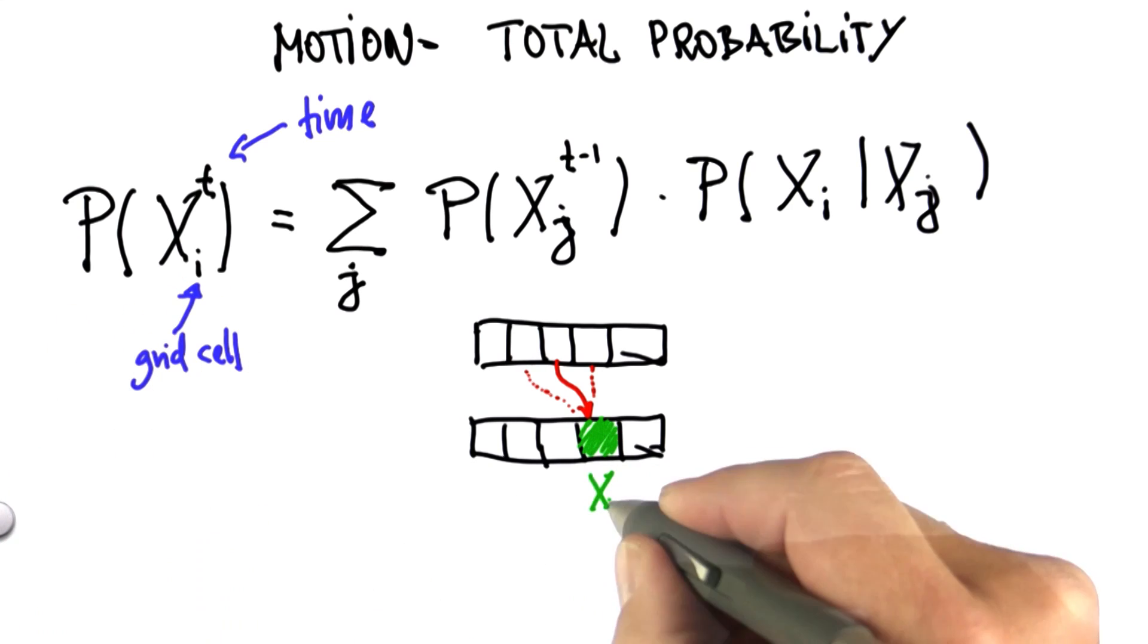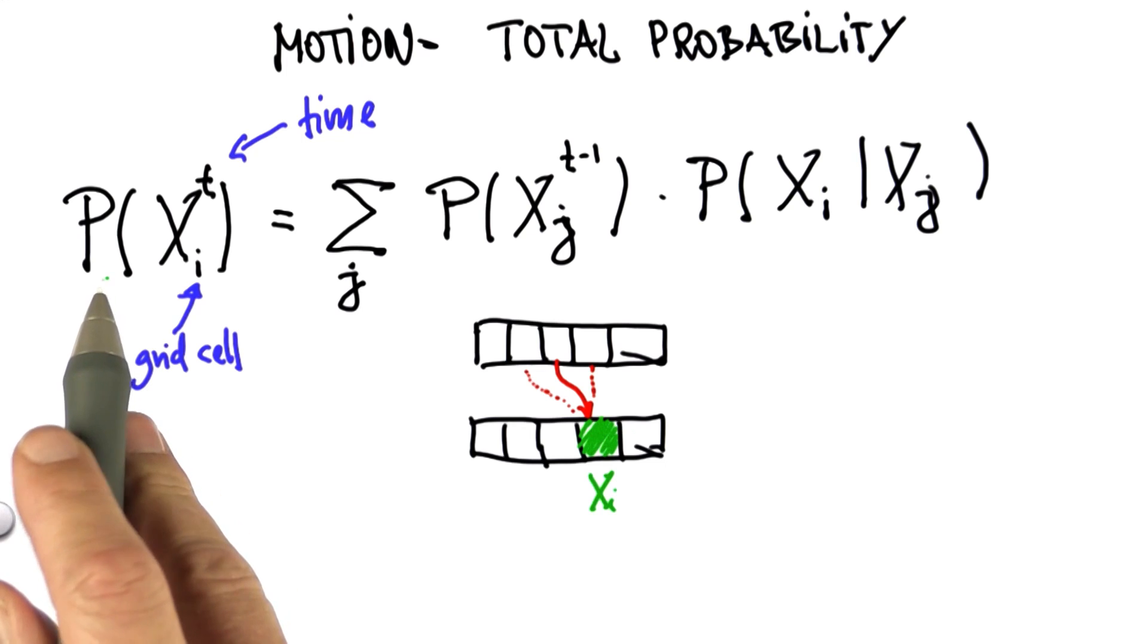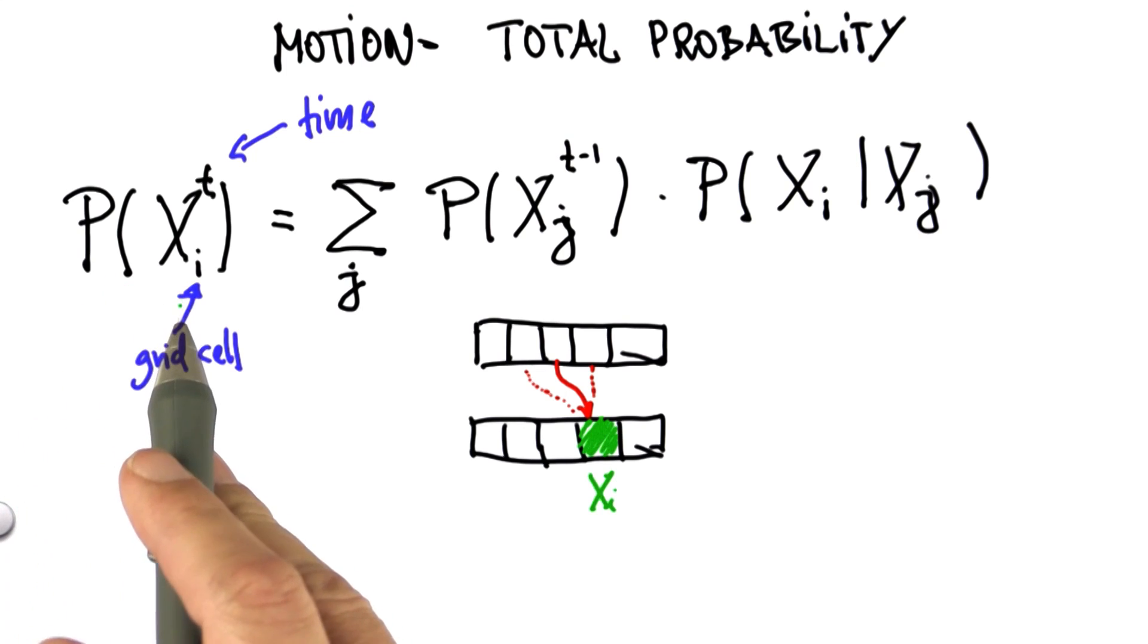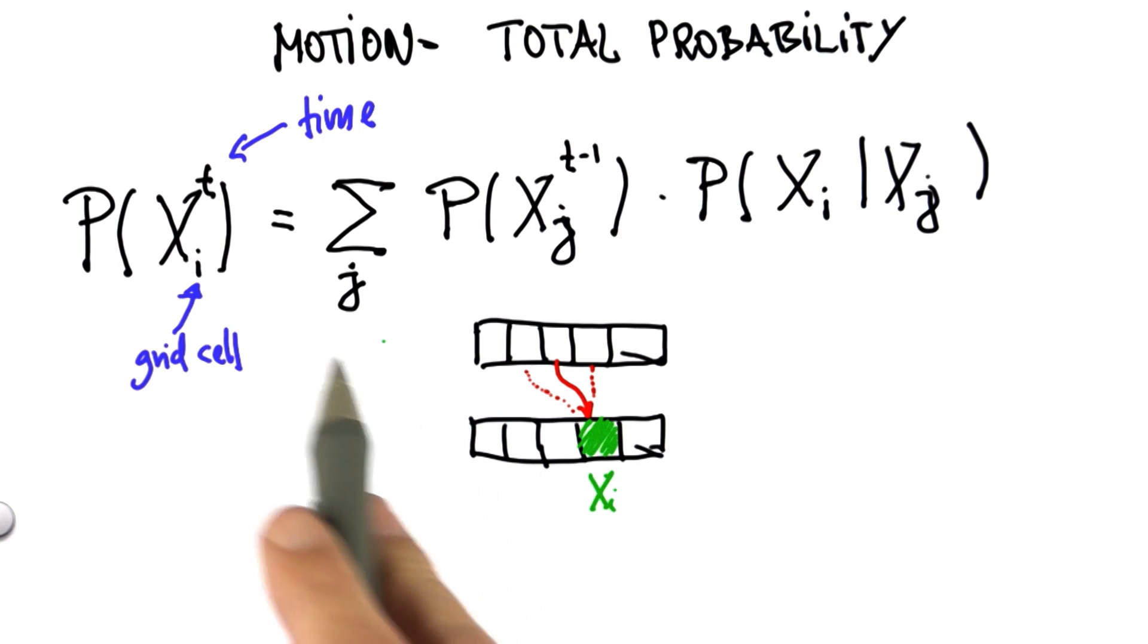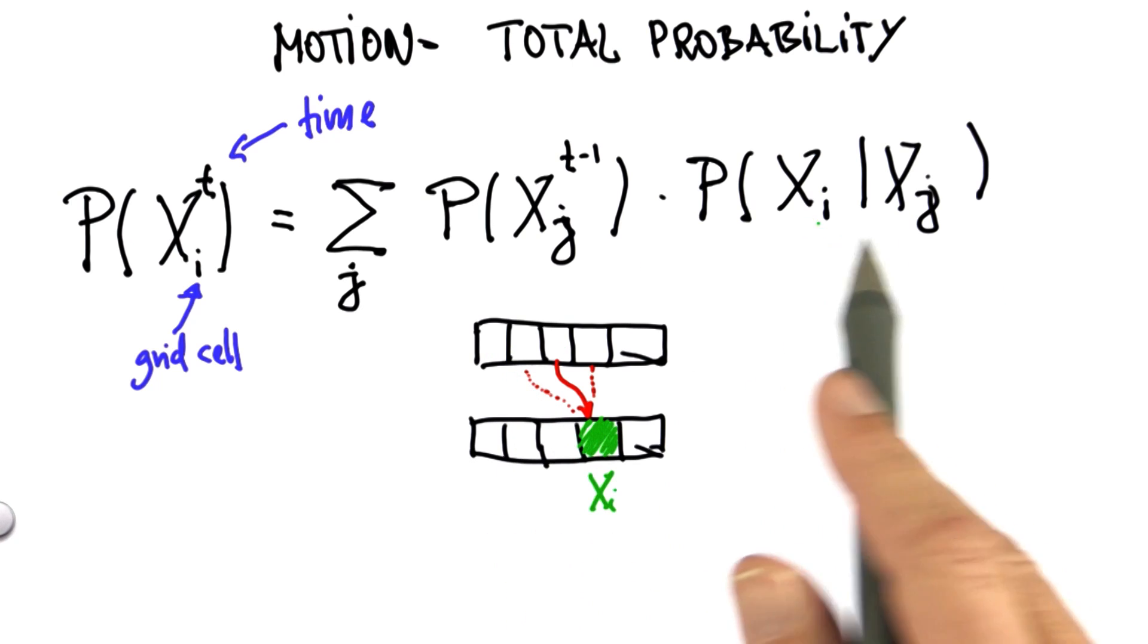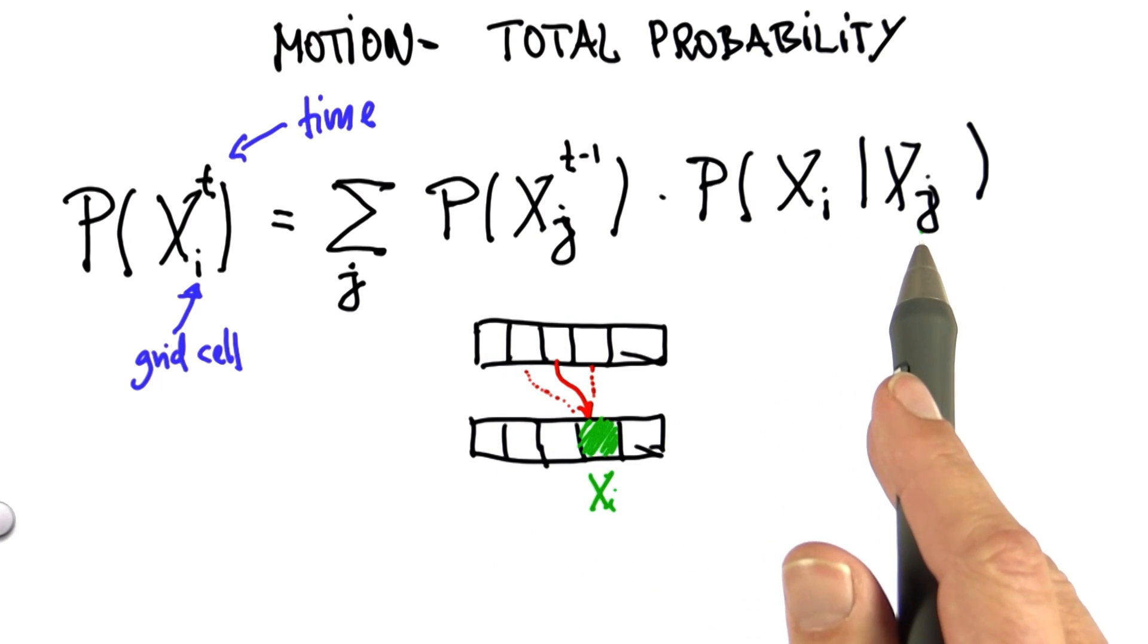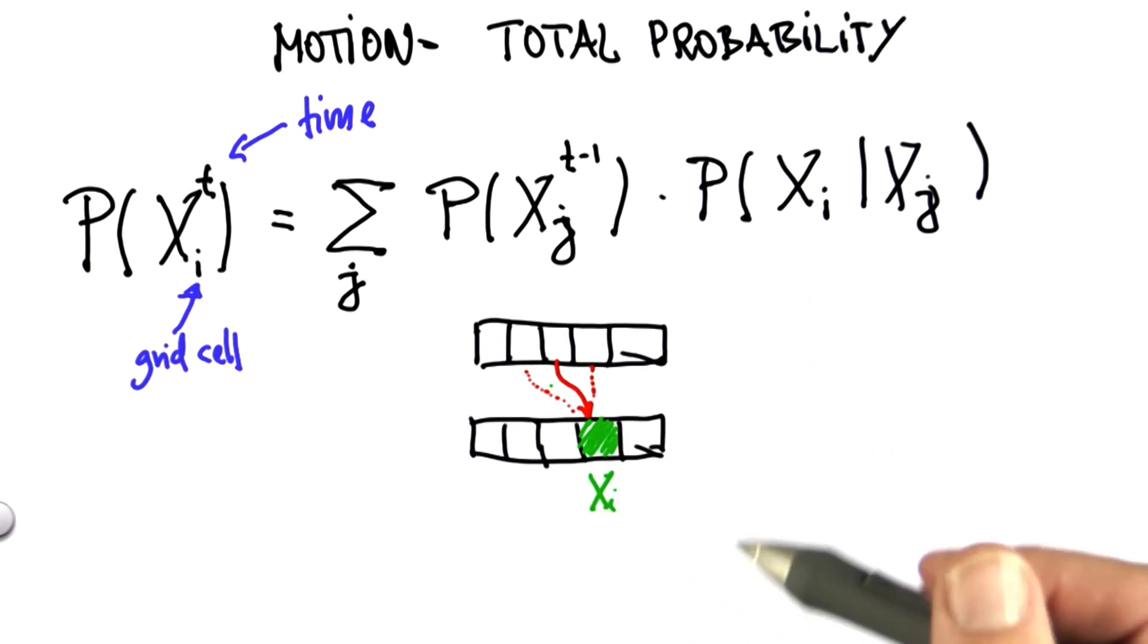It's the same formula as here. This is now xi. And the way we find the posterior probability for xi is to go through all possible places from which we could have come, all the different j's, look at the prior probabilities, multiplied by the probability that I transition from j to i given my motion command, which in this case is go 1 to the right side.